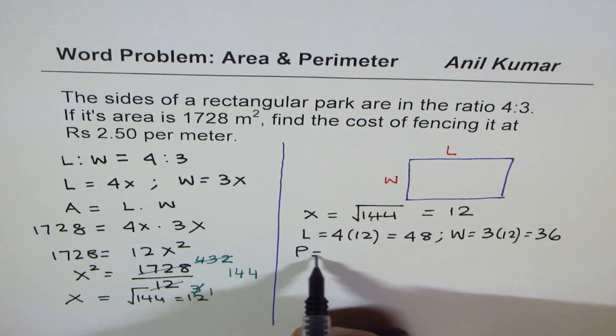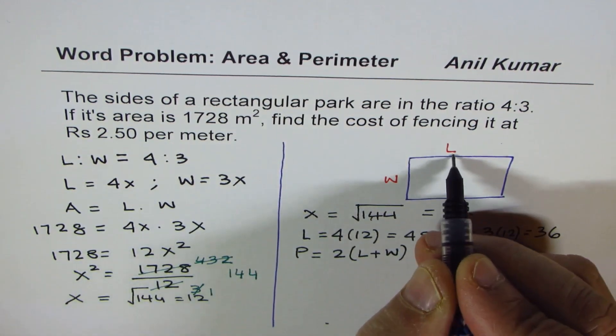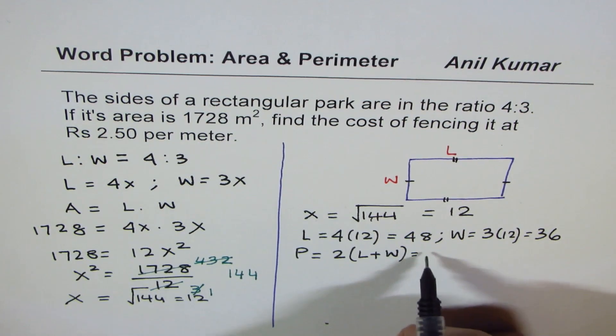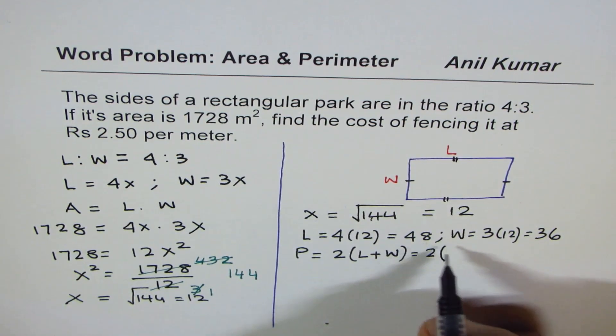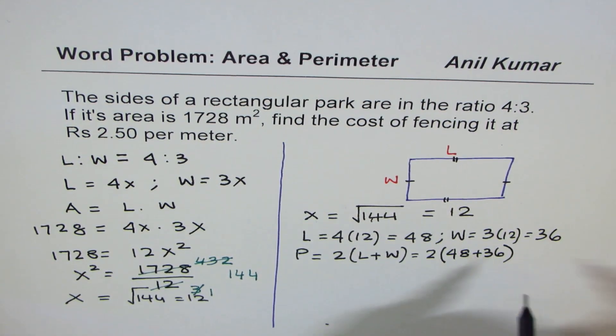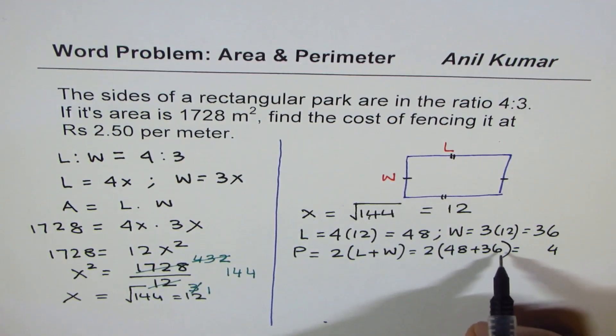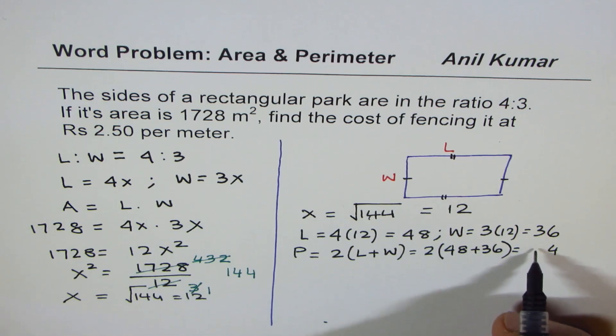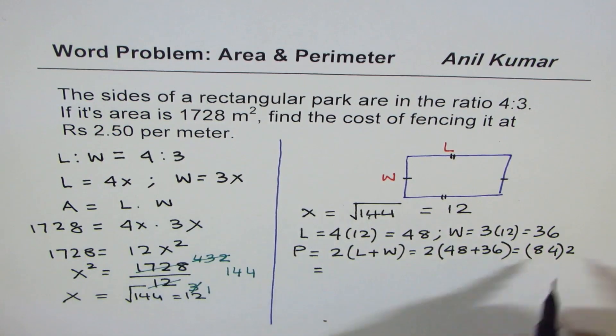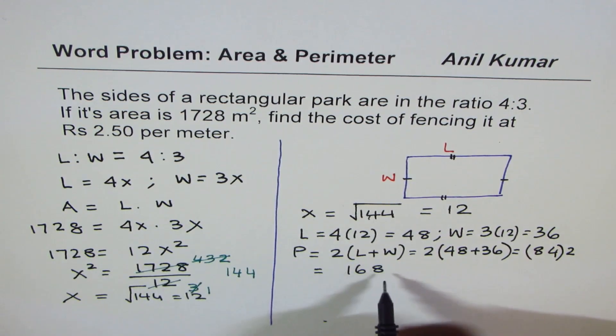So perimeter is twice length plus width, since opposite sides are of equal length. So that gives us twice 48 plus 36. That is equal to 6 plus 8, 14, 4, 1, that is 4 and 4, 8, 84 times 2. So that is equal to 8, 16, 168. And perimeter will be in meters.